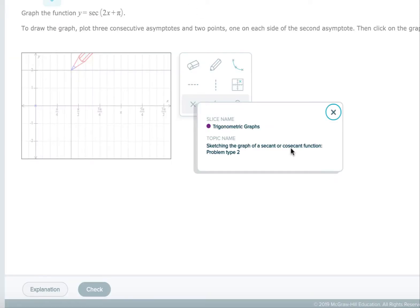Hi class, this is Professor Smith. I am going to be doing a movie on sketching the graph of a secant or cosecant function, problem type 2.